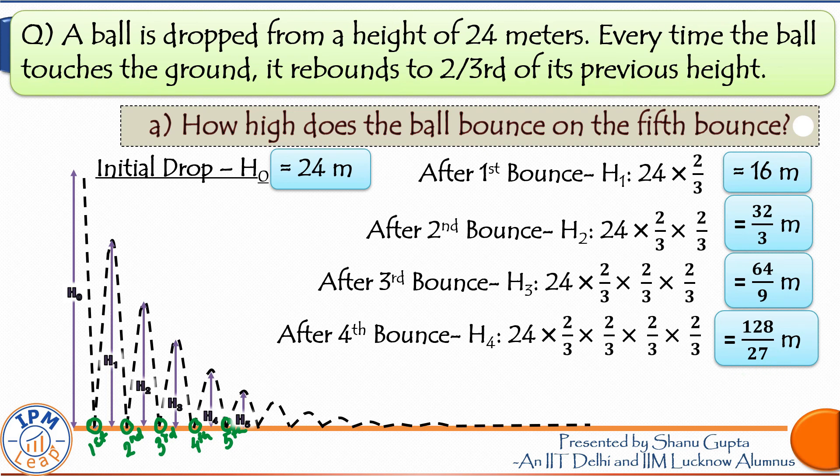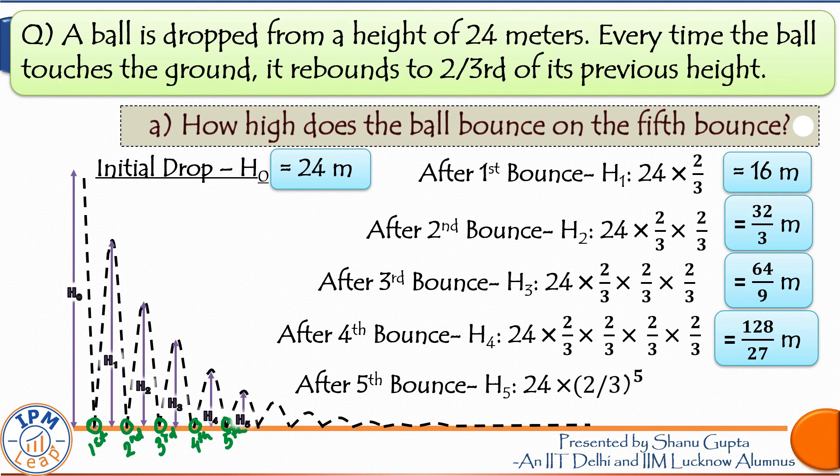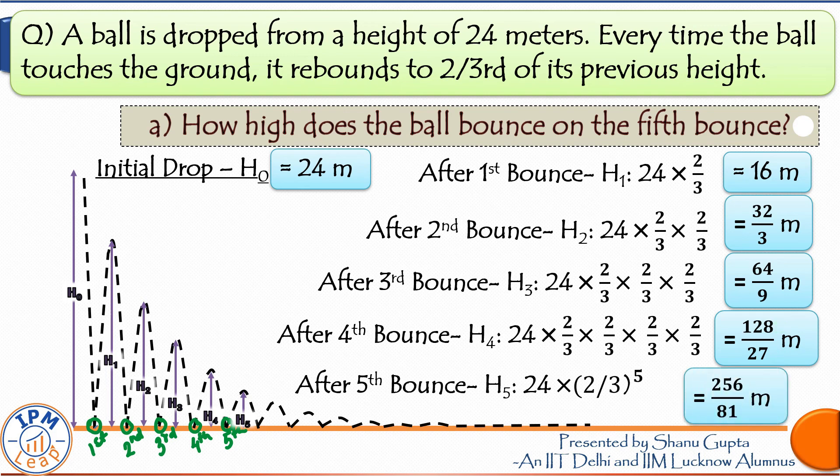And finally, after the fifth rebound, it will bounce back to two-thirds of this previous height. So H5, which is our required answer, will be 128 over 27 times 2/3, that is 256 upon 81 meters. We can do some quick calculations or use a calculator at this stage and this fraction evaluates to 3.16 meters approximately.